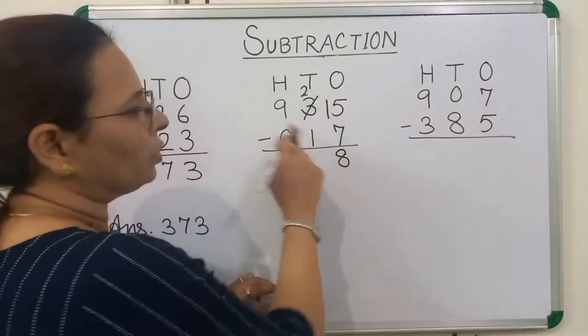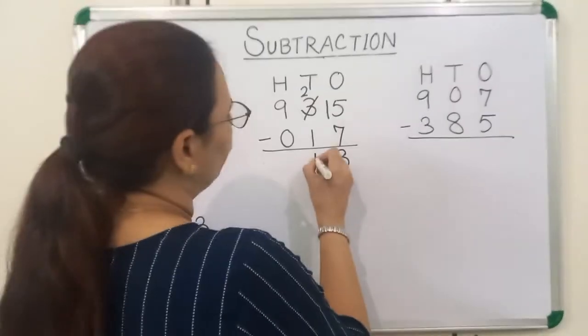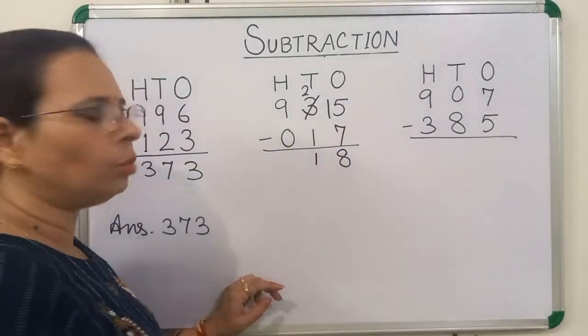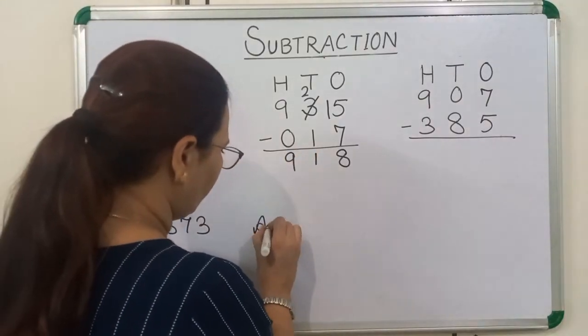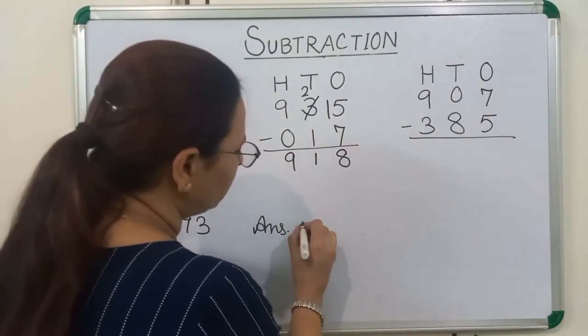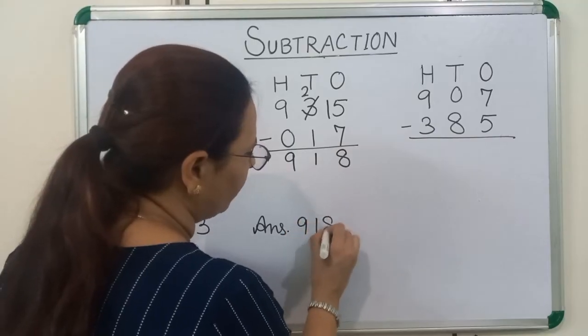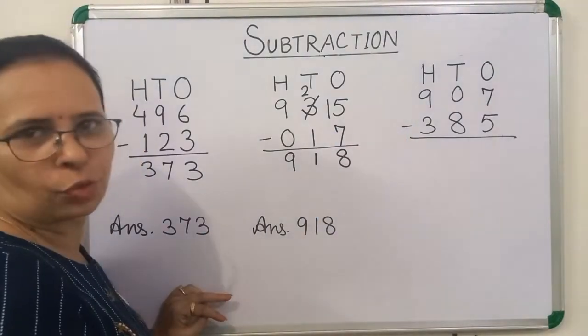2 minus 1 is equal to 1. 9 minus 0 is equal to 9. Our answer is 918. Now we will solve next question.